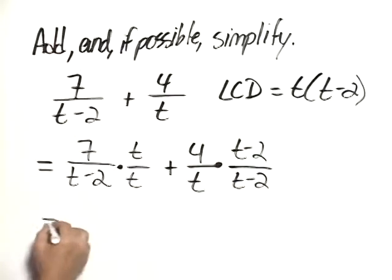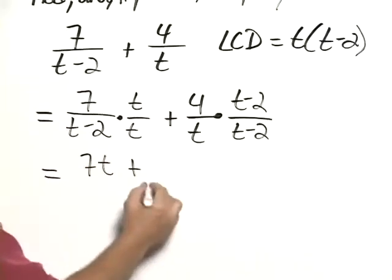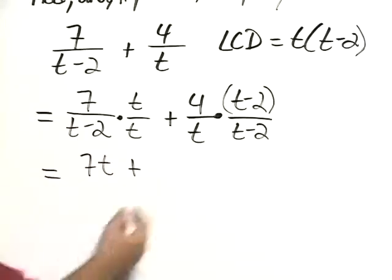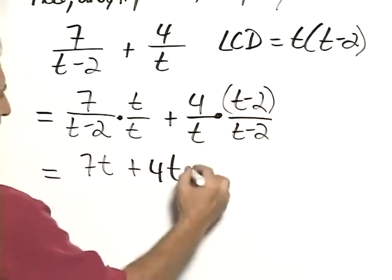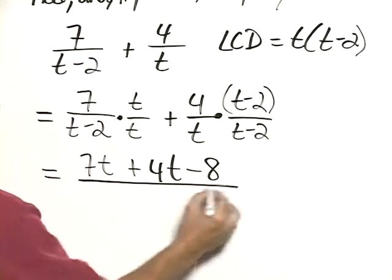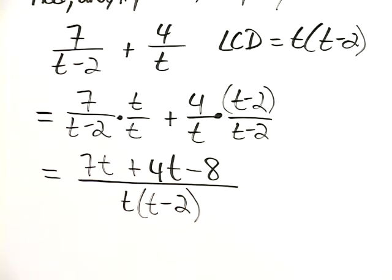Simplifying, 7 times t is 7t plus—now think of this as being in parentheses—so it would be 4 times t minus 4 times 2, which is 8. All of that goes over the common denominator of t times t minus 2.